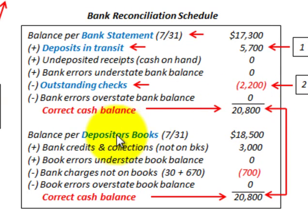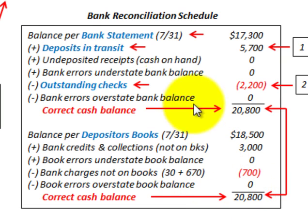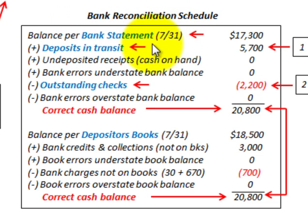Or we can look at the balance per the depositor's books, or the company's books, which would also have a certain cash balance. This is at the end of the month that we're going to be looking at, and there would be some additions and subtractions to the depositor's books to determine the correct cash balance. In this video, we're going to concentrate on the balance per the bank statement, specifically the deposits in transit and outstanding checks.